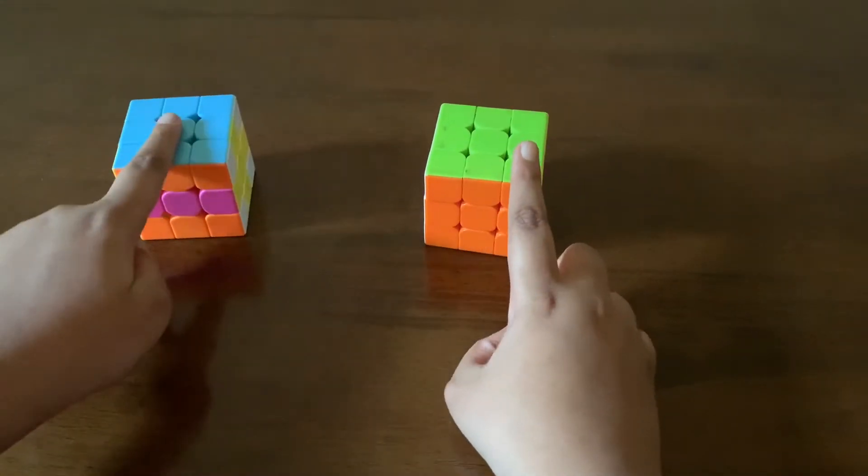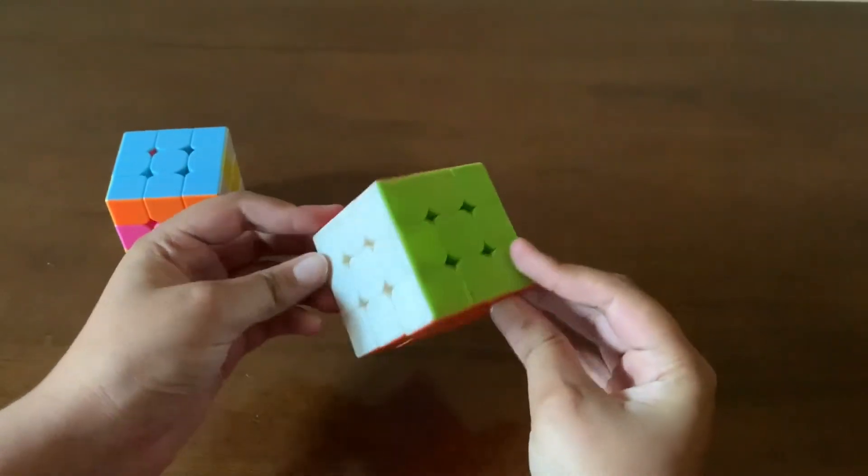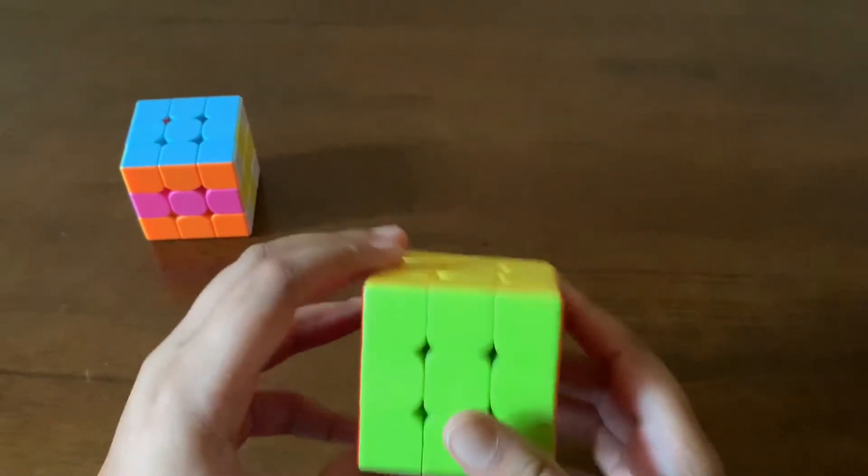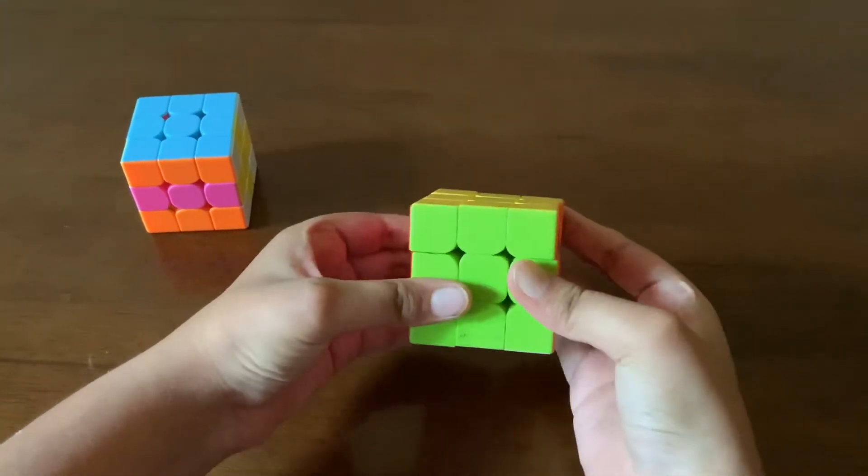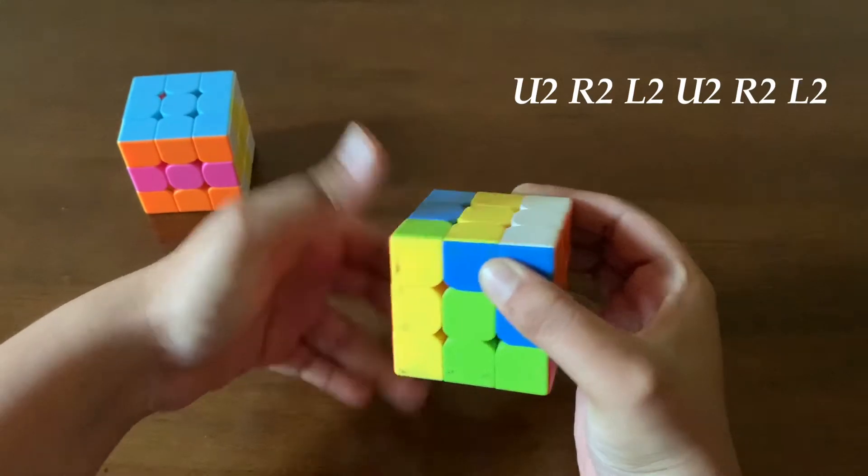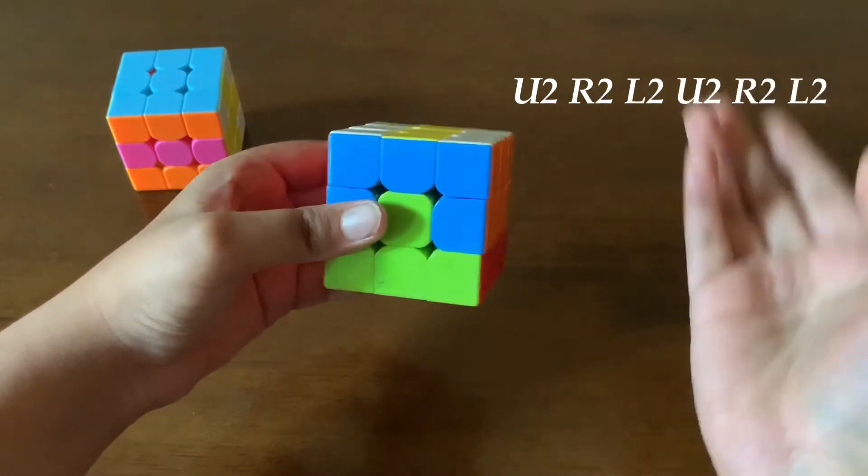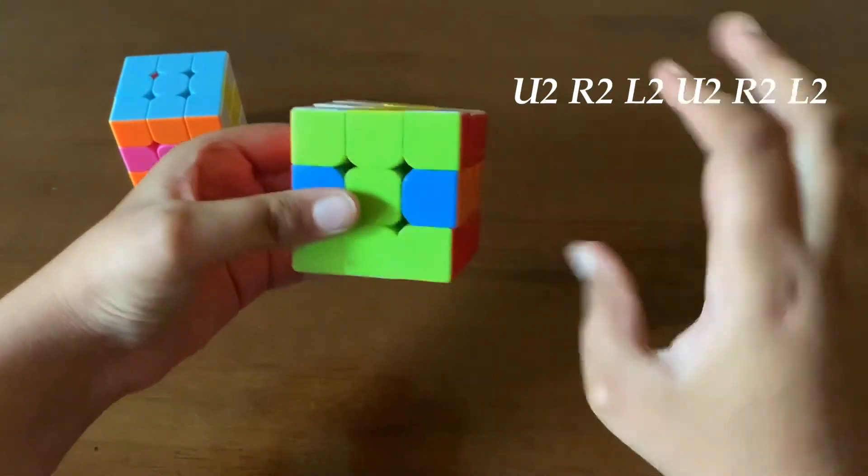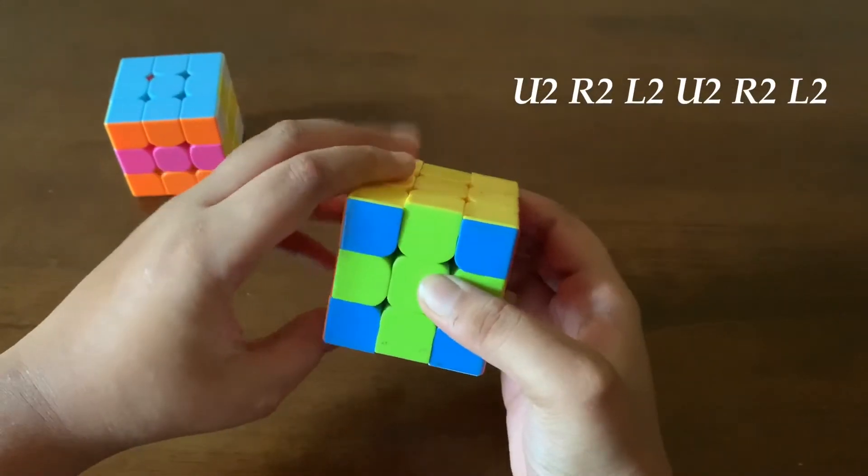So we are going to make that pattern in this cube. The algorithm is very easy, six step algorithm, which is U2, R2, L2. Now, U2, R2, L2, you want to repeat it again. So U2, R2, and L2.